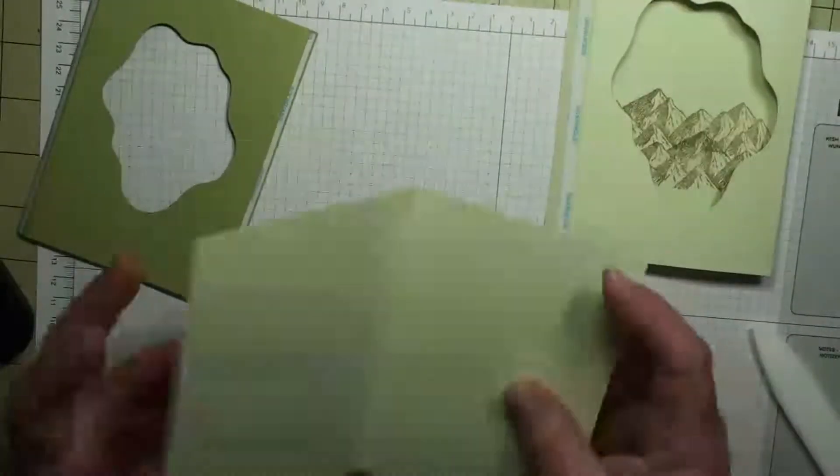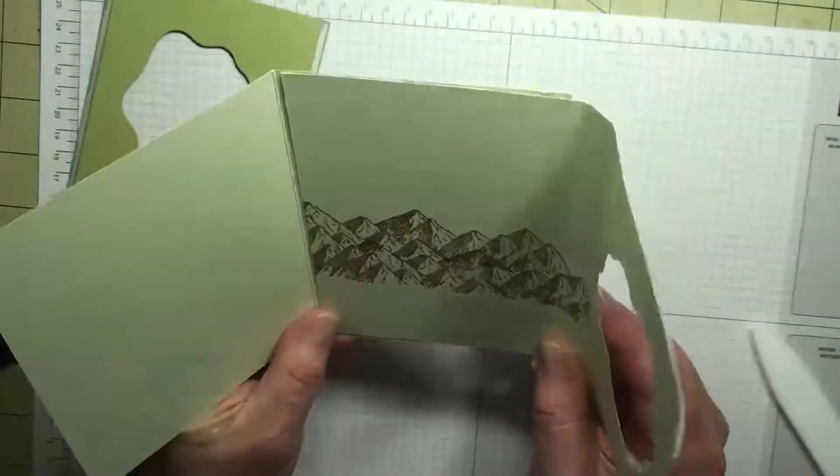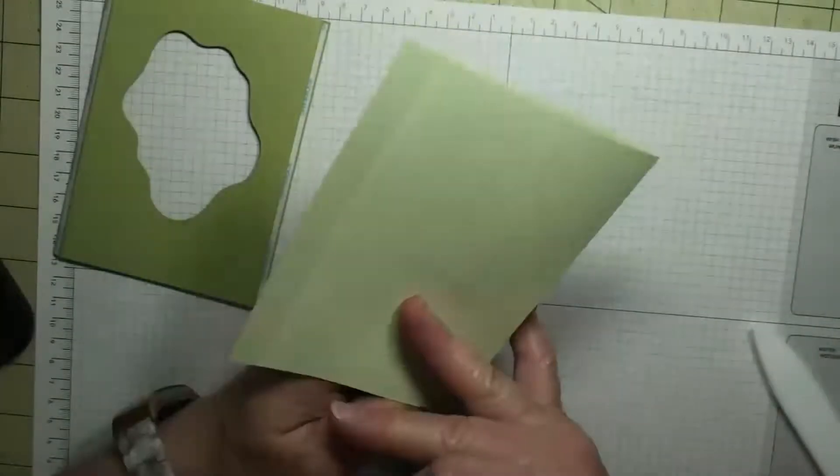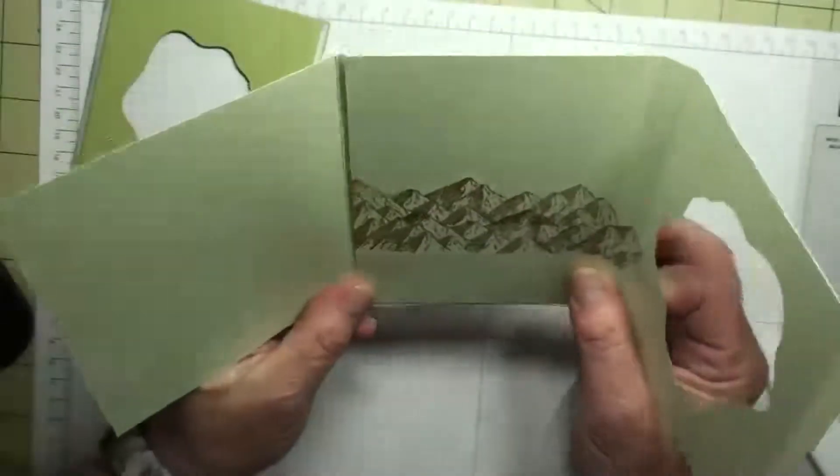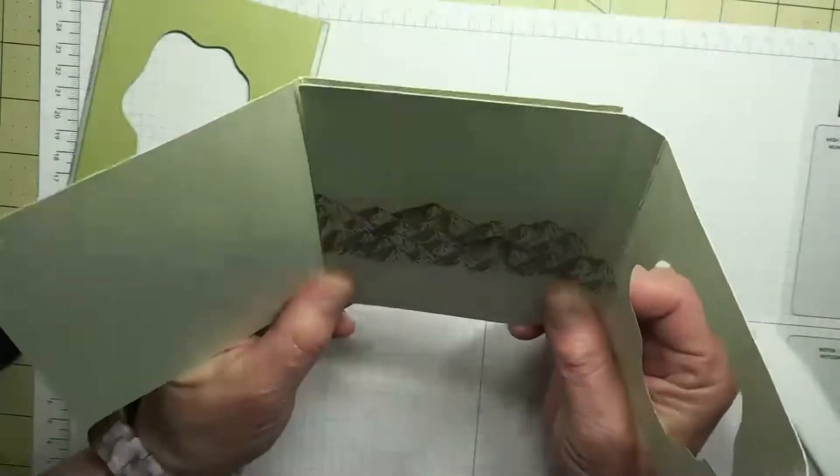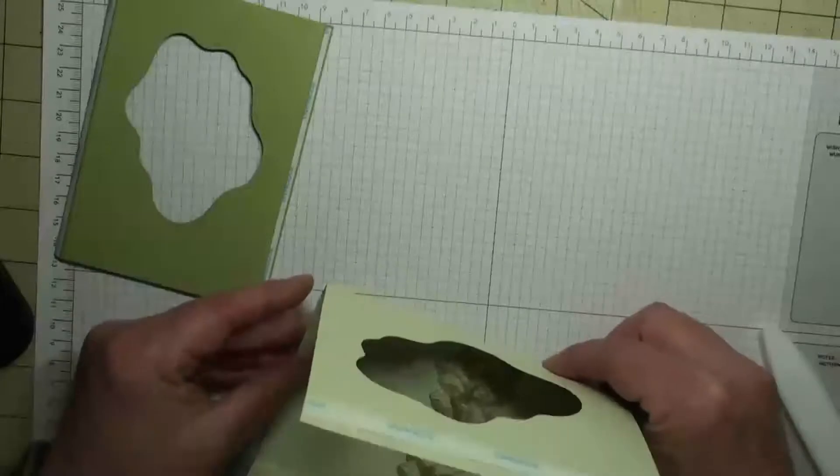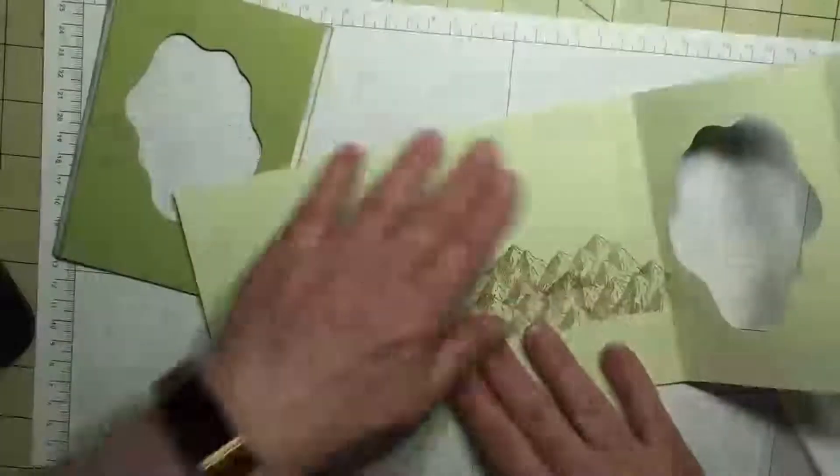Okay, so to put this together, the first thing we're going to do is we are going to put the side with our mountains and the side with no score line and glue it onto the smaller side. You can tell we have one side's larger, one side smaller. We're going to do it on the smaller side of our card base, just like that. Just like so.